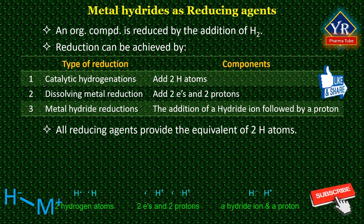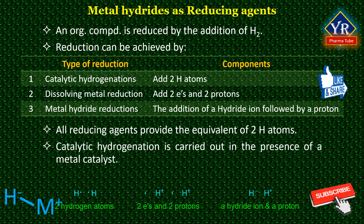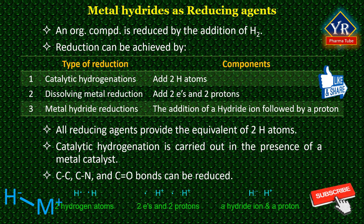All reducing agents provide the equivalent of two hydrogen atoms. Thus, the simplest reducing agent is molecular hydrogen. Reduction of this type, i.e. catalytic hydrogenation, is carried out in the presence of a metal catalyst that acts as a surface on which the reaction occurs. Carbon-carbon, carbon-nitrogen, and some carbon-oxygen multiple bonds can be reduced by catalytic hydrogenation.